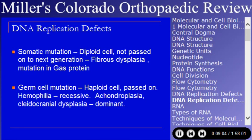There are somatic mutations and germ cell mutations. Somatic mutations occur in diploid cells and consequently are not passed on from generation to generation. On last year's in-training there was a question about the mutation in the GAS protein in fibrous dysplasia, which is a somatic mutation expected to occur in the individual involved but not in any progeny. Germ cell mutations occur in haploid cells and are passed on from generation to generation. Hemophilia is the classic example, a sex-linked recessive process. Achondroplasia is a commonly asked question — it is an autosomal dominant mutation.